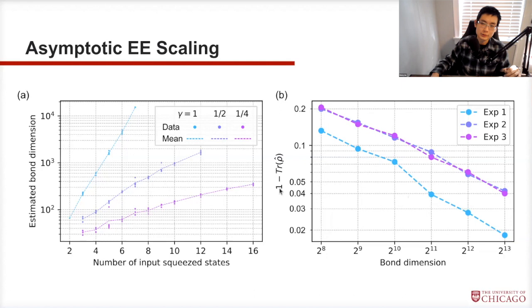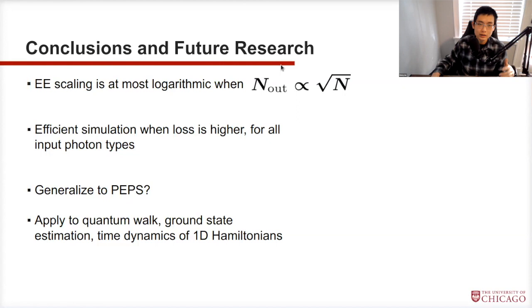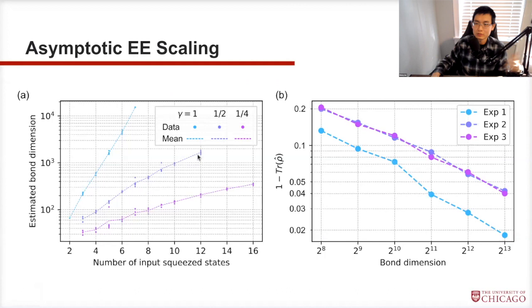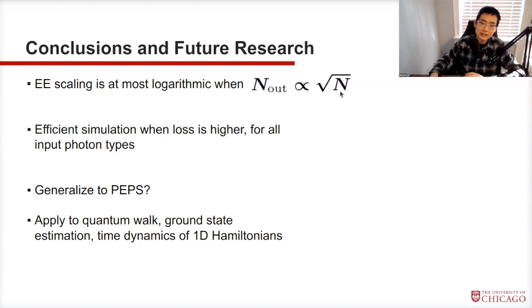Overall, the conclusion is that entanglement entropy scaling is at most logarithmic when the output photon count is the square root of the input photon number. This means efficient simulation is possible when loss is higher — evidence that with logarithmic entanglement entropy, the bond dimension doesn't grow exponentially, making simulation efficient. If any future experiment scales worse than this, classical simulation will be efficient and quantum advantage cannot be demonstrated in the most rigorous sense.